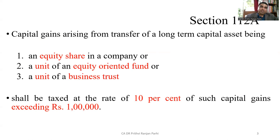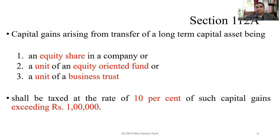This slide summarizes the entire provision. It explains that three kinds of assets are covered under this section: equity shares in a company, units of equity oriented fund, and units of business trust. The rate of tax is 10 percent, applicable only on the amount in excess of one lakh. Conditions apply regarding Securities Transaction Tax. If an asset is not covered under Section 112A, tax is to be paid as per Section 112.